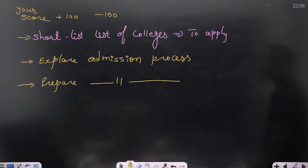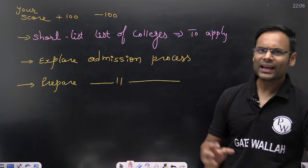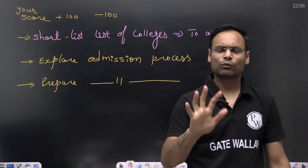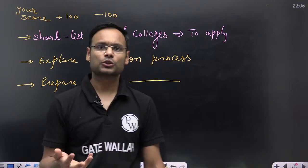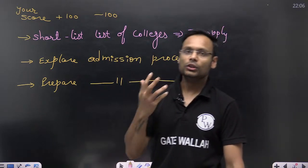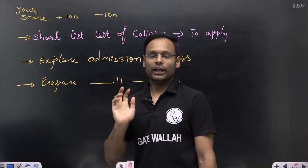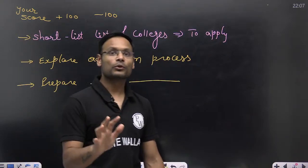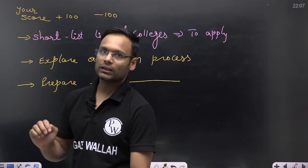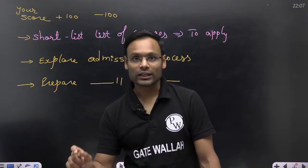If needed, prepare for the admission process — written test, interview, or similar. Keep applying to those colleges before the last date. You can also narrow down your list further if you're confident that among six or seven colleges you're applying to, you can easily get one or two. If your score in computer science or DA is 550 and above for general category — adjusted for your category — and you're not getting a good target college, consider MTech research.